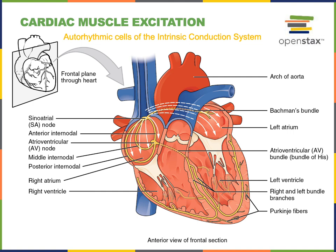The autorhythmic cells are found within the SA node (sinoatrial node), the AV node (atrioventricular node), and also throughout the fibers of the intrinsic conduction system — including the atrioventricular bundle (bundle of His), the bundle branches, and Purkinje fibers. This intrinsic conduction system allows the action potential to spread rapidly through the heart.